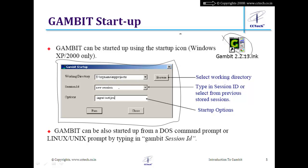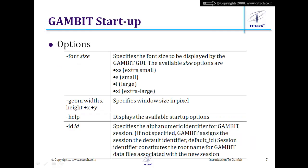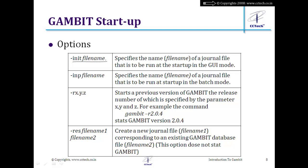The options field is for running GAMBIT with special options. One important option is -init, which reads a journal file. A journal file is a command file for GAMBIT, and using -init will execute all the commands in the journal file automatically, allowing fully automated processing.